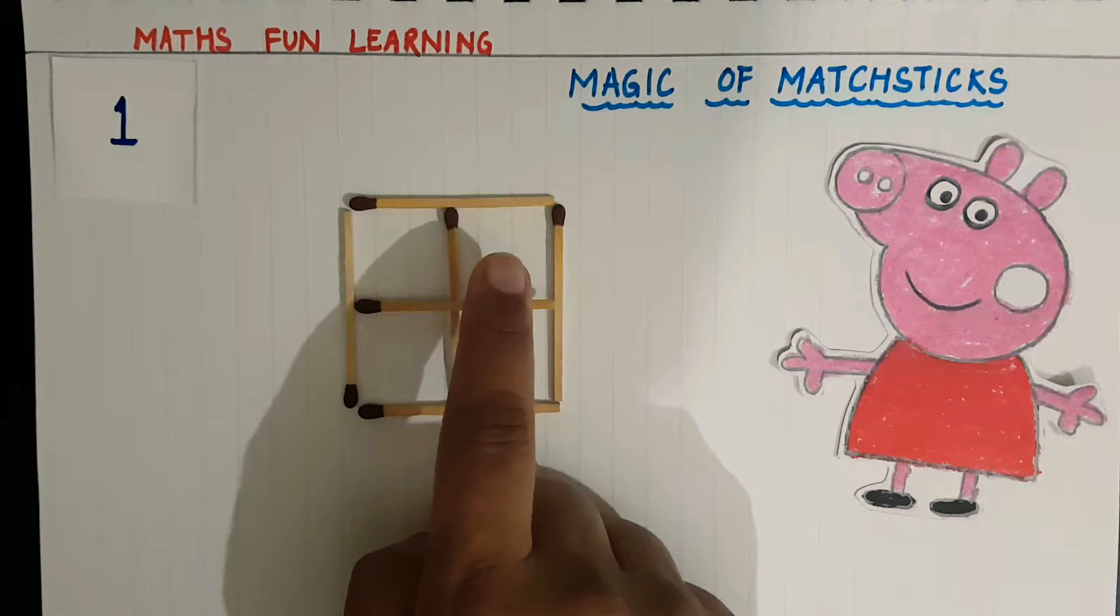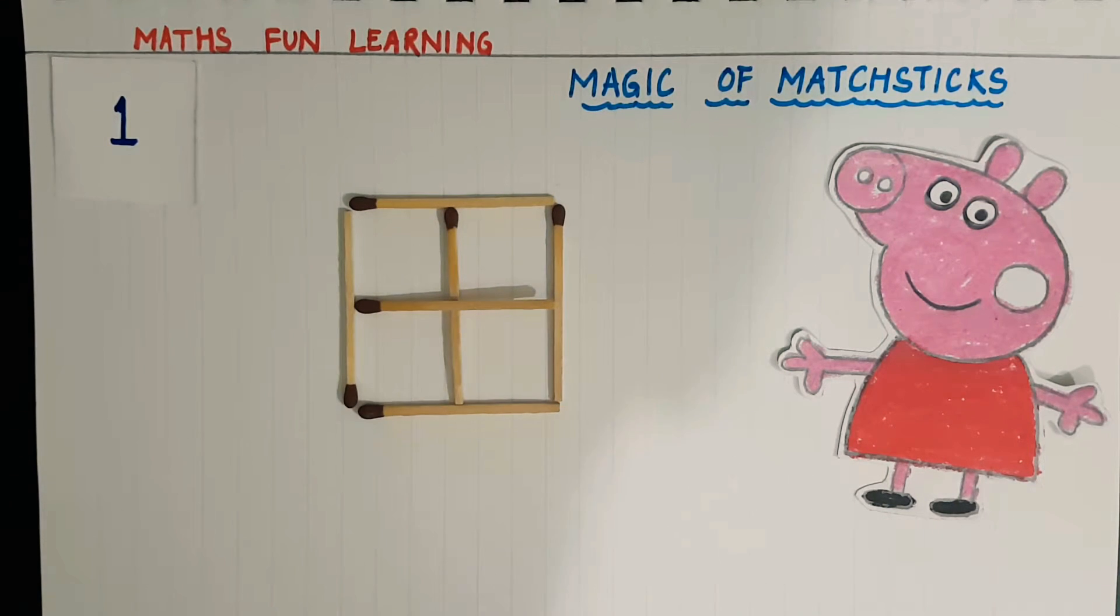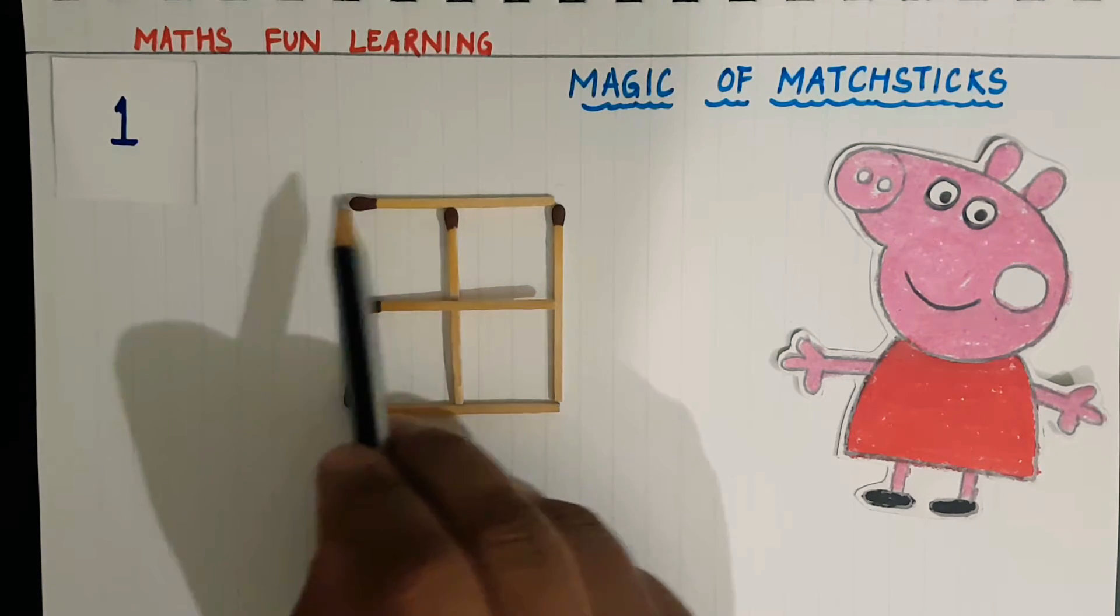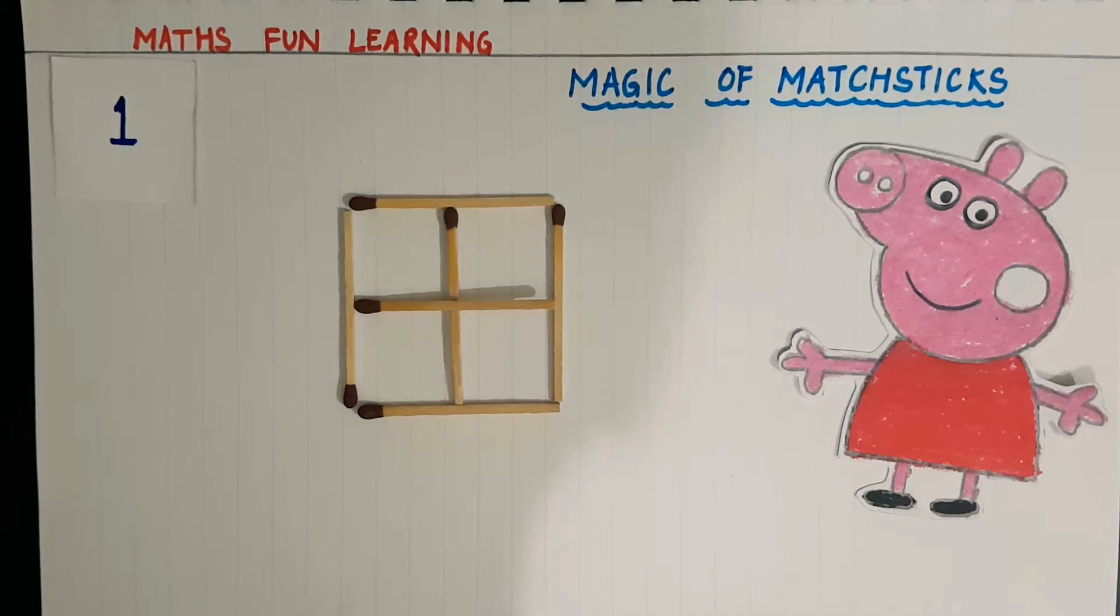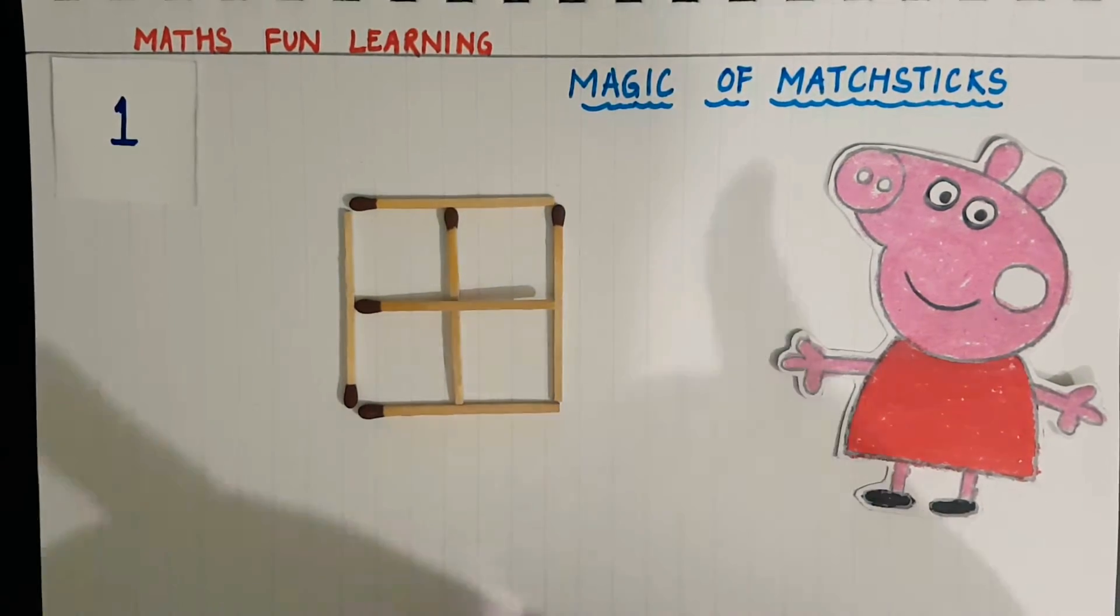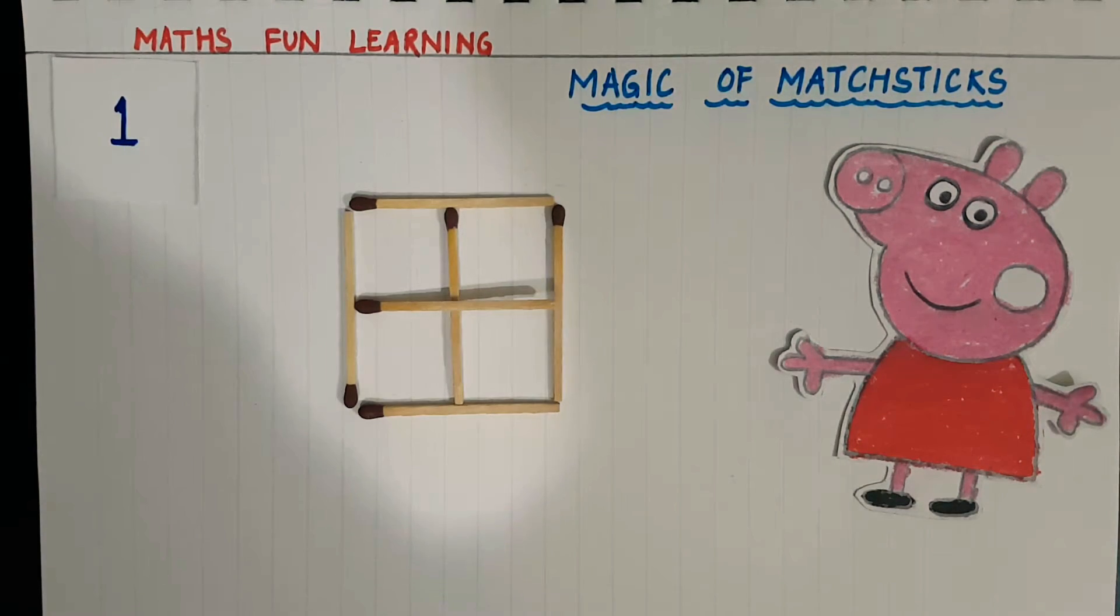And now you can see here there is one big square as well. So now I changed my square into five squares. So done, magic of matchsticks! Yes. Now let's move on to the second question.